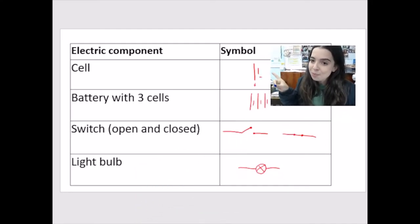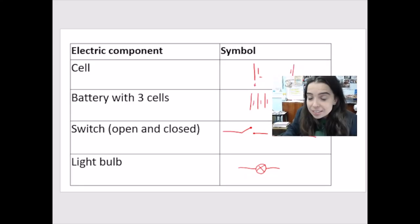So a cell looks like this over here. We've got the long terminal, which is the positive terminal. And the short terminal, which is the negative terminal, that pairing, that long line and the short line, that generally makes up one cell. If they say a battery with three cells, we just draw three of them next to each other.